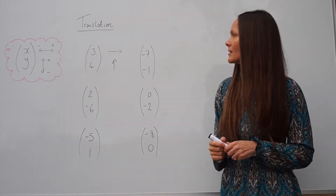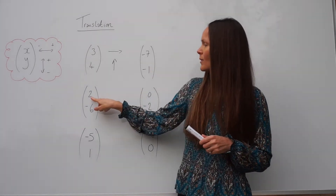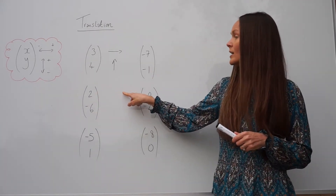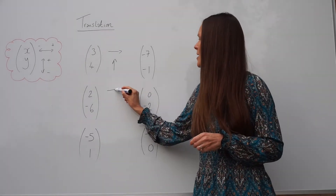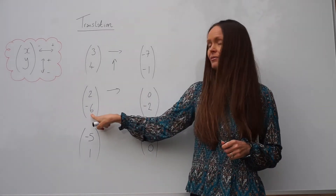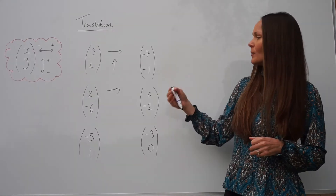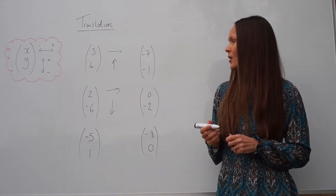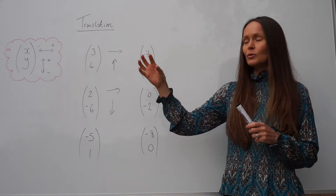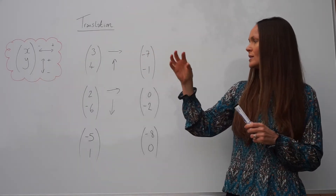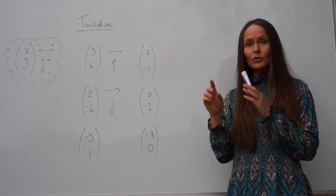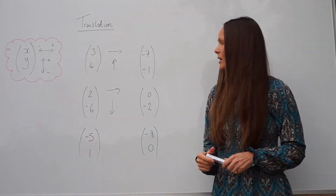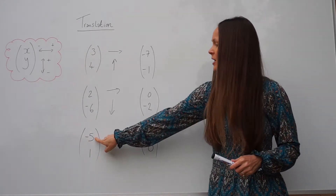Next we have a positive and a negative: two on top and negative six underneath. The top is positive so you're moving two units to the right. The bottom is negative six, so the shape needs to move six units down. You take your shape, move two units to the right and six units down, then draw it in the new position.